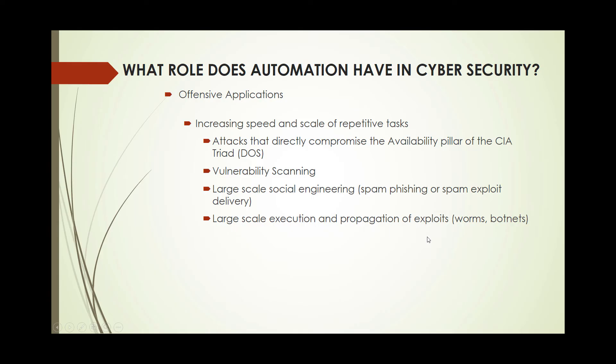A computer virus that self-propagates, like a worm, is an example of automation. You only have to find one initial attack vector, get that virus into a system, and it will bounce its own way around the system without you having to do any more work. And a really key concept related to denial-of-service attacks is the idea of a botnet, which we'll cover in a couple of slides in a little more depth.